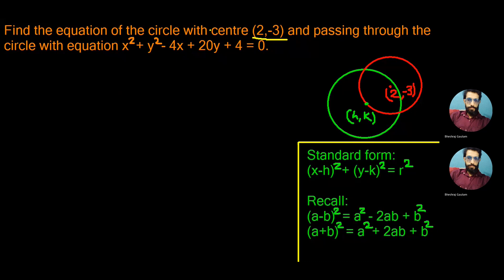In the given figure, we are supposed to find the equation of a circle drawn in red color, which has the center (2, -3), and this circle is passing through the center of another circle drawn in green color, which has the center (h, k). The problem is that only the equation of the green colored circle is given, so first of all we will simplify that equation into standard form and find its center.